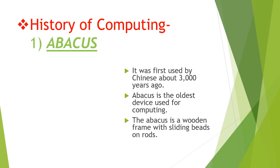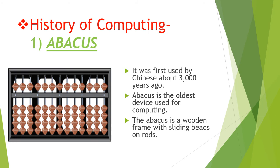Computing also means the study and use of computing in today's world. First is the Abacus, 3,000 years ago. The Abacus is the oldest known device used for computing. It was first used by the Chinese about 3,000 years ago. The Abacus is a wooden frame with sliding beads on rods, arranged on two sides of a crossbar. The beads are moved to calculate, used to perform addition and subtraction easily and speedily. The Abacus is still used for counting in Japan, Korea and China.